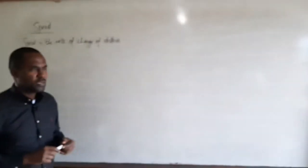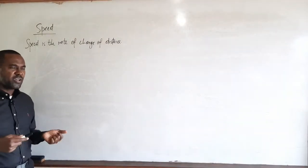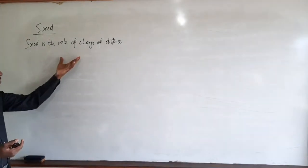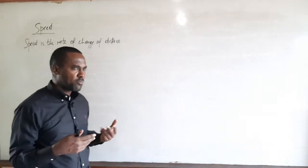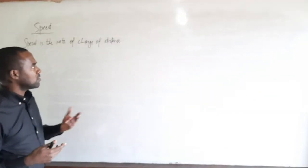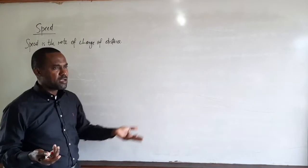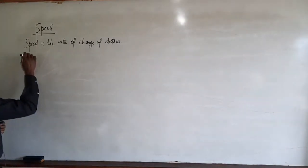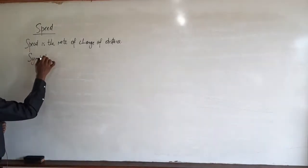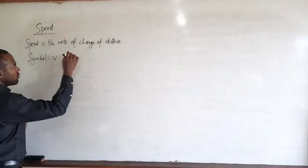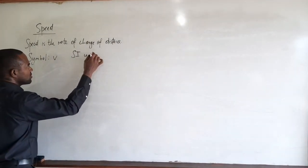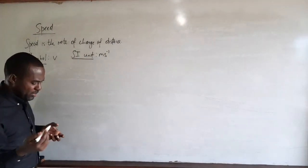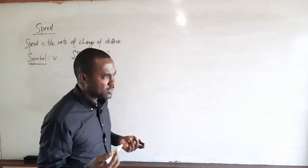In some books you may see speed defined as the rate of change of distance with time. But usually when you see the expression 'rate of change,' that implies with respect to time, and therefore in some books you may see 'with time' being omitted. So speed is the rate of change of distance.